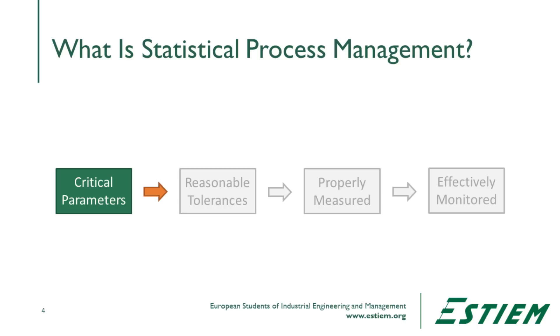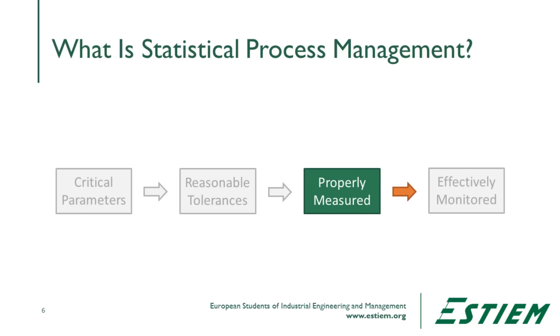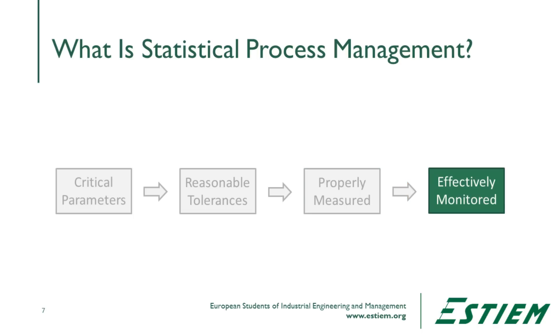When we talk about statistical process management, we begin by understanding what the critical parameters are that we need to measure. We need a system for collecting that data and tolerances within which we believe it should be performing. We have to properly measure that data, effectively monitor it, and ensure we have feedback loops to keep it within those reasonable tolerance bands. This is the objective for all statistical data used to manage and control the process.